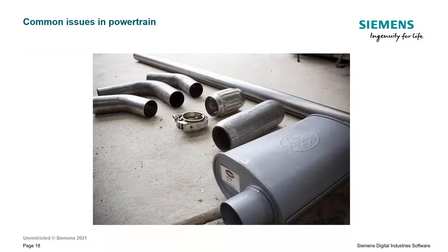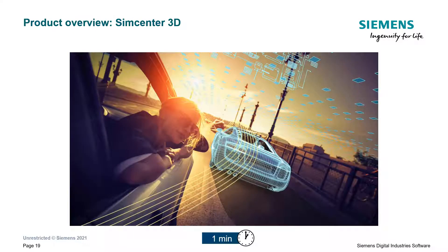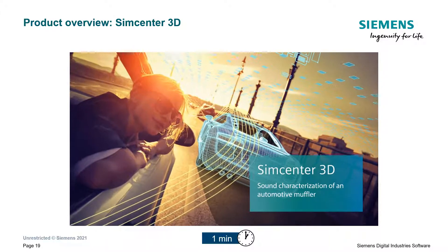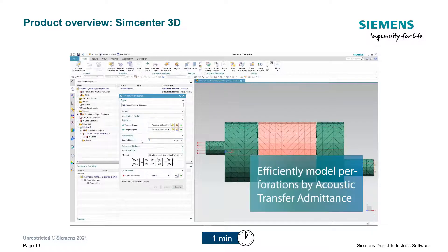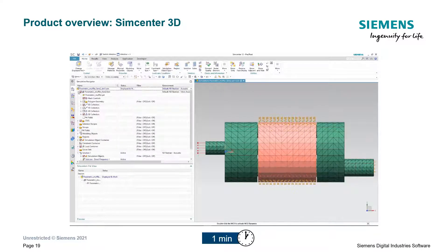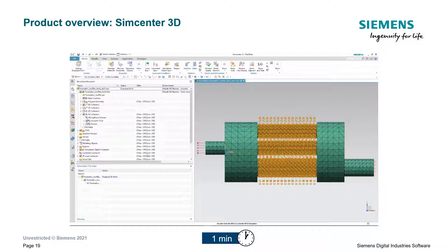Another common issue is that teams don't have the ability to simulate their muffler in order to reduce noise and pass sound requirements at competition, so they build and test multiple mufflers. Simcenter 3D helps here, as you can perform these types of simulations directly in NX or use it in combination with a variety of other CAD platforms, which enables fast design iterations. Simcenter 3D gives you the ability to model porous materials surrounding the muffler perforations, and the acoustic transfer admittance feature eliminates the manual work associated with meshing perforated holes, saving simulation time and modeling effort.